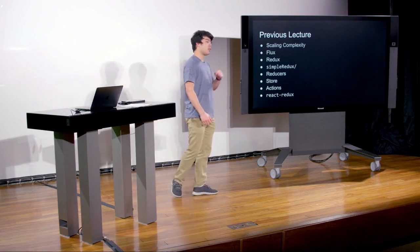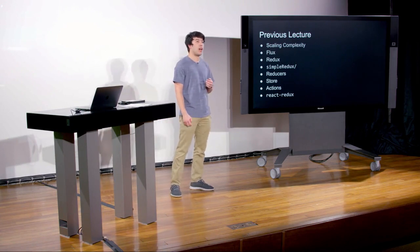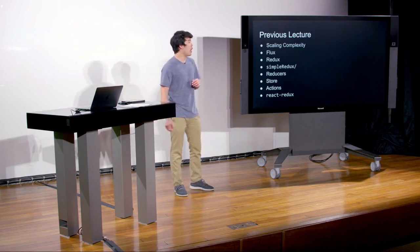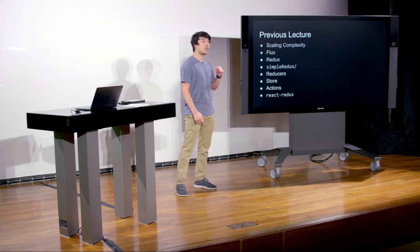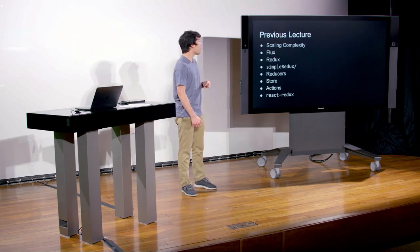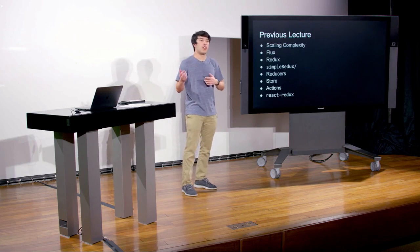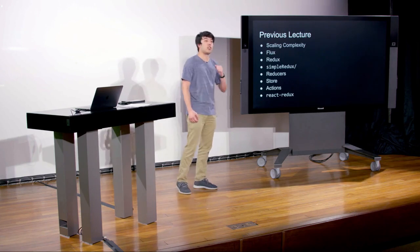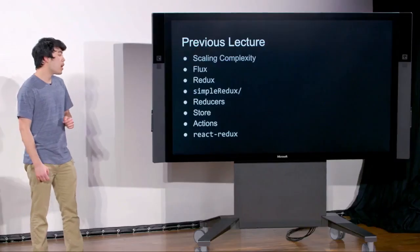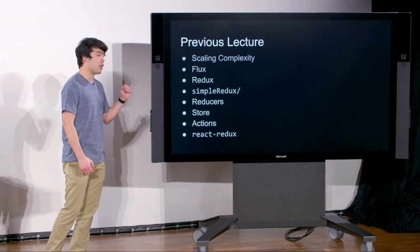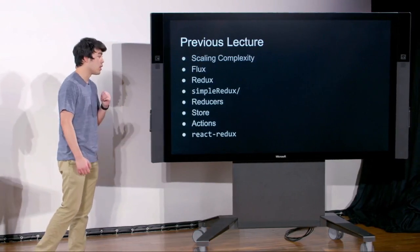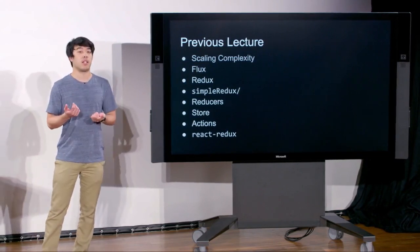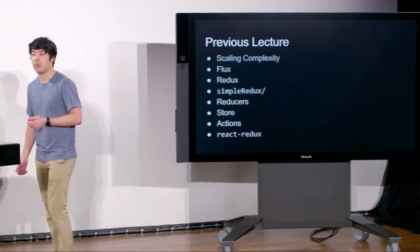We talked about their particular solution to that problem, which is the Flux architecture, whereby data takes a one-way street — there are no two-way bindings between models and the controllers. We then talked about Redux, which is an implementation of Flux, and implemented our own version called Simple Redux, which had reducers, the store, and some actions. We wrapped up last week by looking at React Redux, which provides React bindings allowing us to use Redux with a project written in React.